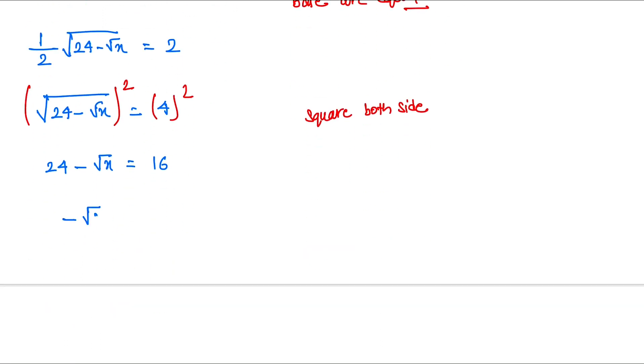So now, -√x = 16 - 24. This becomes minus on the right-hand side. So √x = -8, and this minus and minus is canceled also, so that is √x = 8.